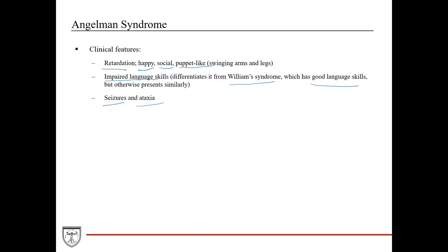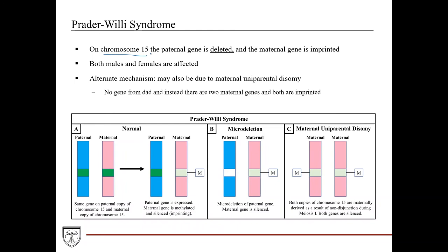Now we'll talk about Prader-Willi syndrome, which also involves chromosome 15. However, in this case the paternal gene is deleted and the maternal gene is imprinted — the opposite of Angelman syndrome. It also involves a different gene, though it is also on chromosome 15. The gene on the maternal chromosome is methylated and silenced, and the paternal gene is expressed to give a normal phenotype — this is maternal imprinting. Just like in Angelman syndrome, even though this is sex-specific imprinting, both males and females are affected.